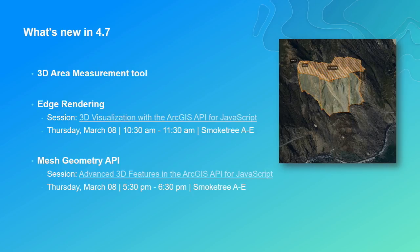For developers — especially 3D developers — there's the Mesh Geometry API. Currently the API supports point, line, and polygon geometry you can add to a graphics layer. What we didn't have until now is mesh geometry, allowing you to create your own 3D objects on the client and add them to the scene. This enables things like a vertical image, a billboard on the road next to buildings. I'll talk about that in more detail tomorrow afternoon.